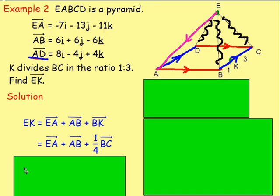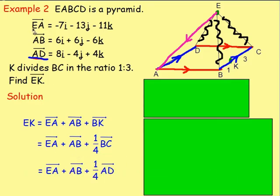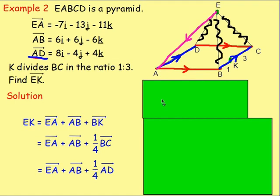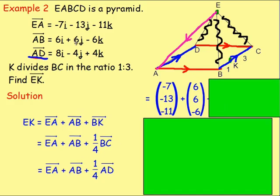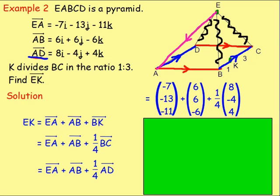Thinking about the vectors we know: EA is negative 7i take away 13j take away 11k, so (negative 7, negative 13, negative 11). AB is (6, 6, negative 6). And the quarter BC — well, BC is the same as AD, so it's really a quarter of AD. In component form: EA gives negative 7, negative 13, negative 11. AB gives 6, 6, negative 6. And a quarter of AD — a quarter of (8, negative 4, 4) — means multiplying every term by a quarter, giving (2, negative 1, 1).